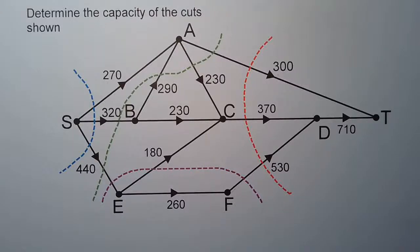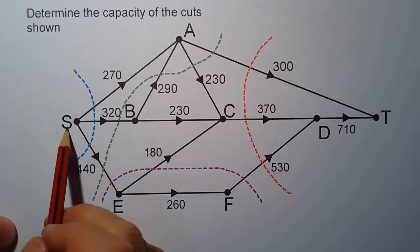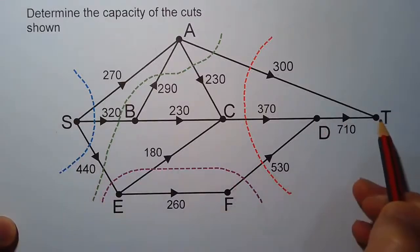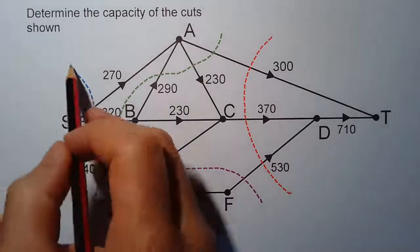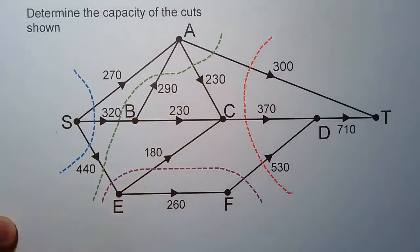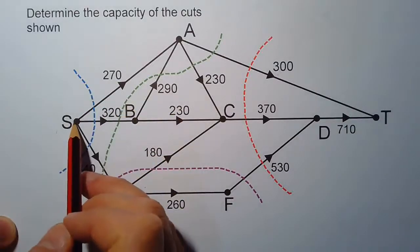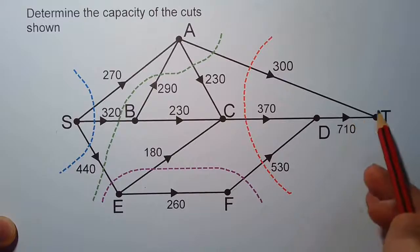In this example, we're going to determine the capacity of the cuts shown. A cut in a network flow diagram separates the source from the sink totally. In other words, when a cut is made, there should be no way or no path that can get you from S to T.